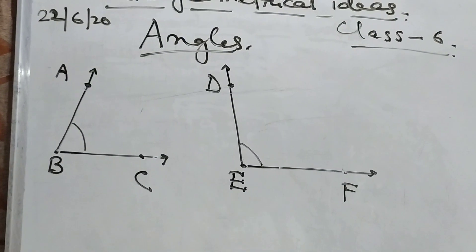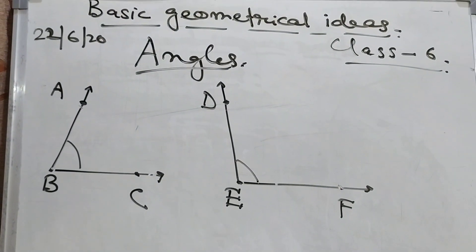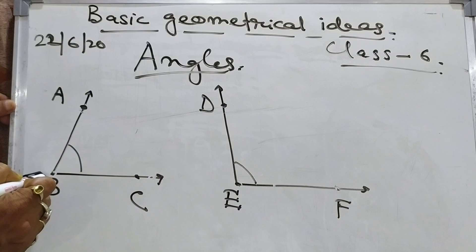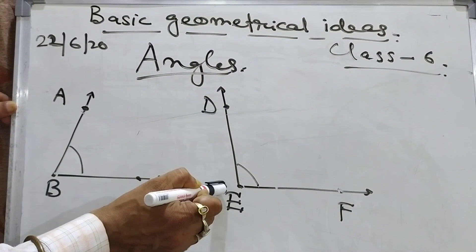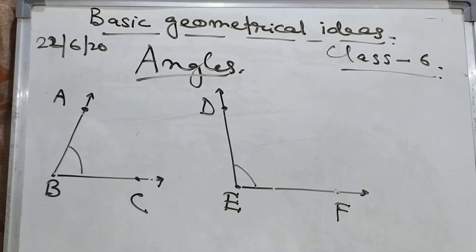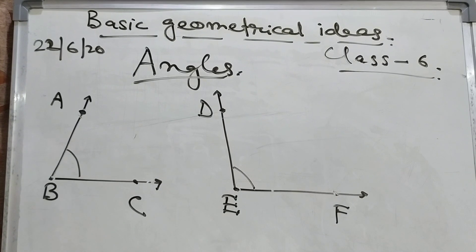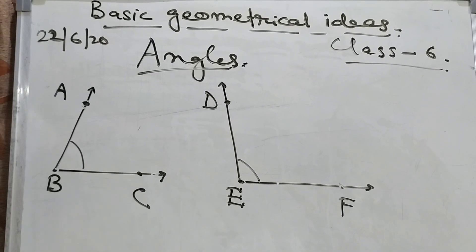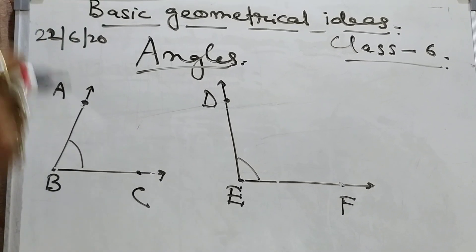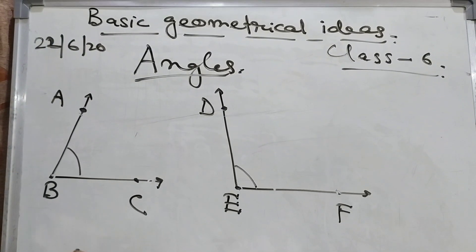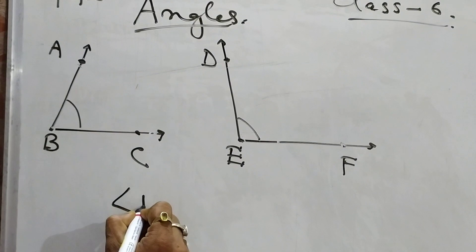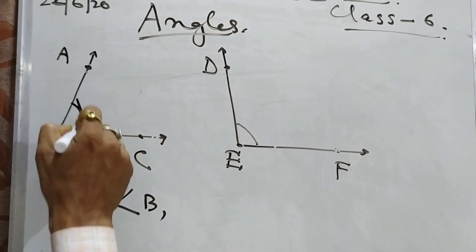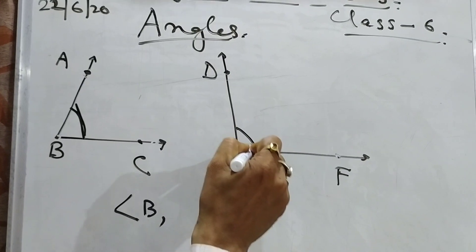AB and BC, DE and EF are the arms of the angle. Now, how will we name the angle? There are many ways to name the angle. The first one is angle B — we can name it simply as angle B, and this represents the angle at B. Similarly, angle E means this is the angle at E.